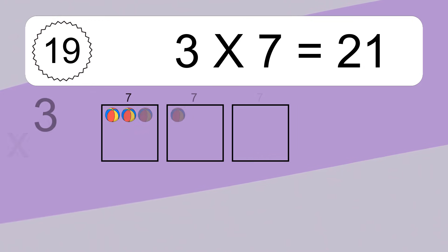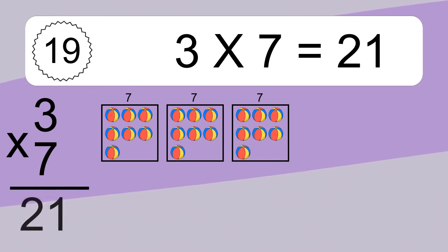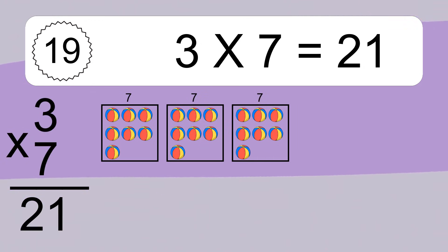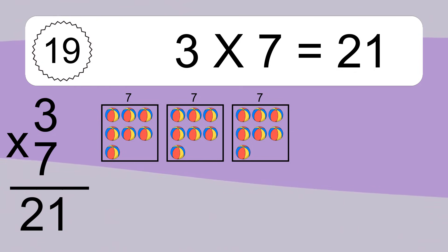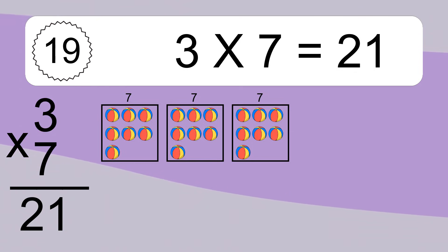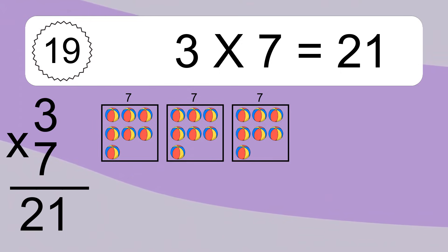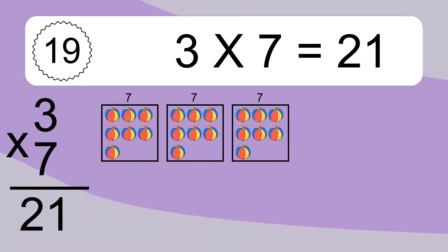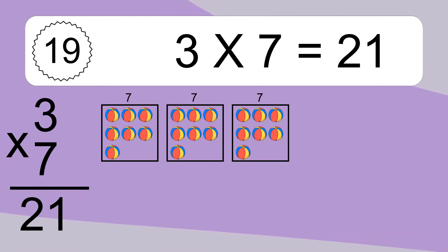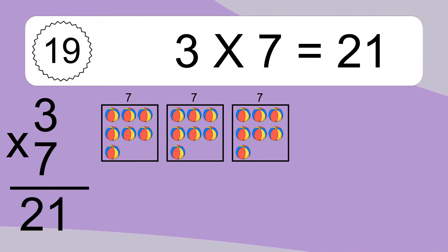3 times 7 equals what? 3 times 7 equals 21. We have 3 boxes and each box has 7 colorful balls inside. If you count all the balls in all the boxes together, you will have 3 times 7 balls. This equals 21 balls.